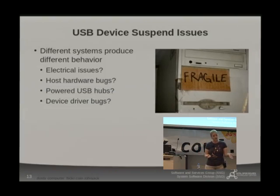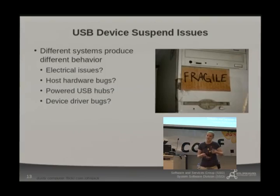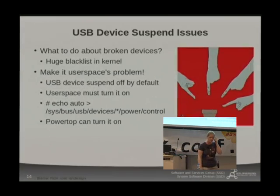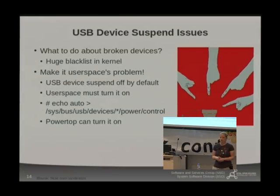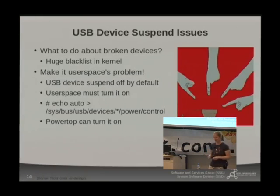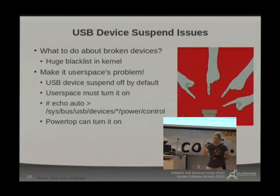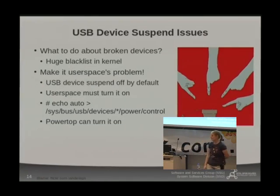We started out saying we want to enable good power management — we want all these devices to suspend — we'll just make a blacklist in the kernel of all these bad devices and it will work out fine, right? No. The blacklist got much too large and was too difficult to maintain in the kernel. So basically we made it user space's problem, which means we made it our users' problem. We turned auto-suspend off by default for all devices except USB hubs.